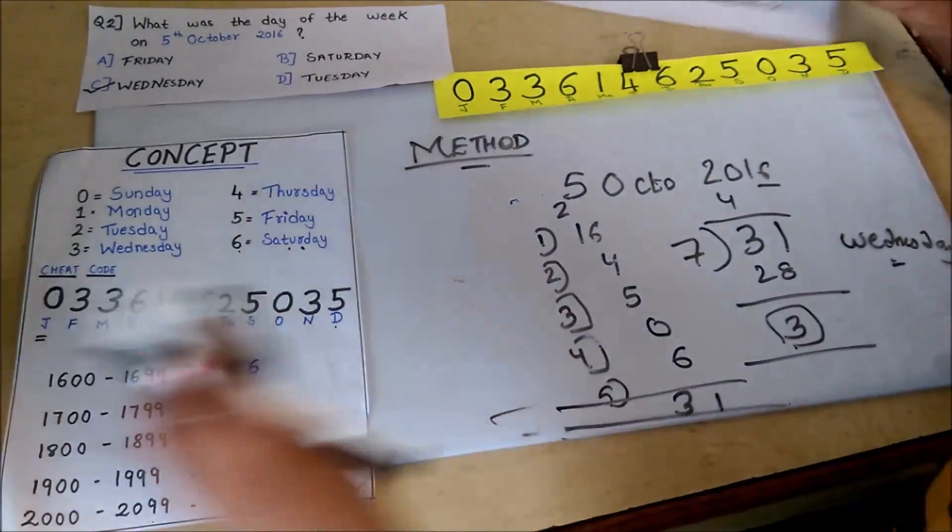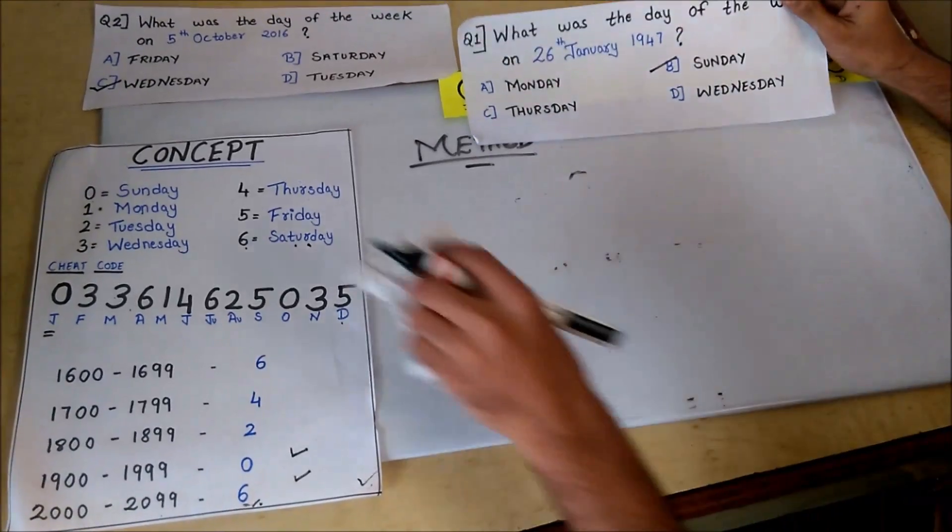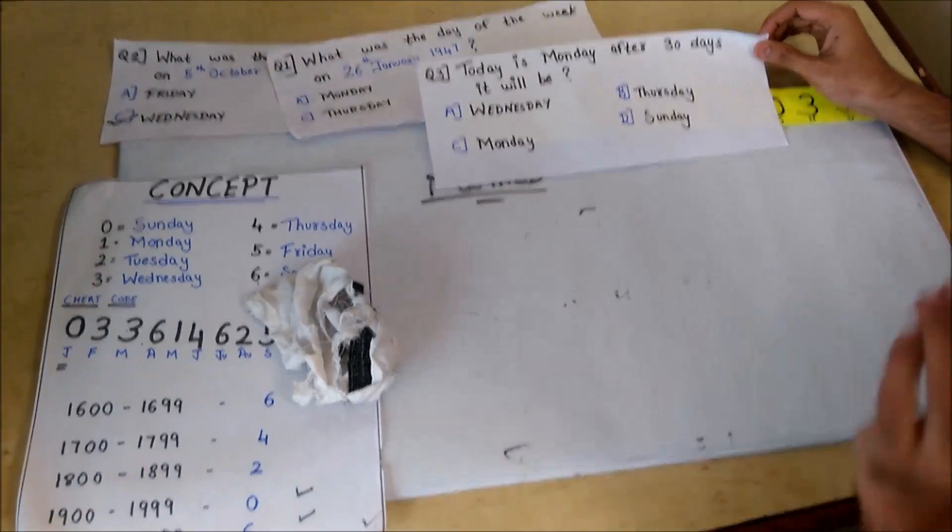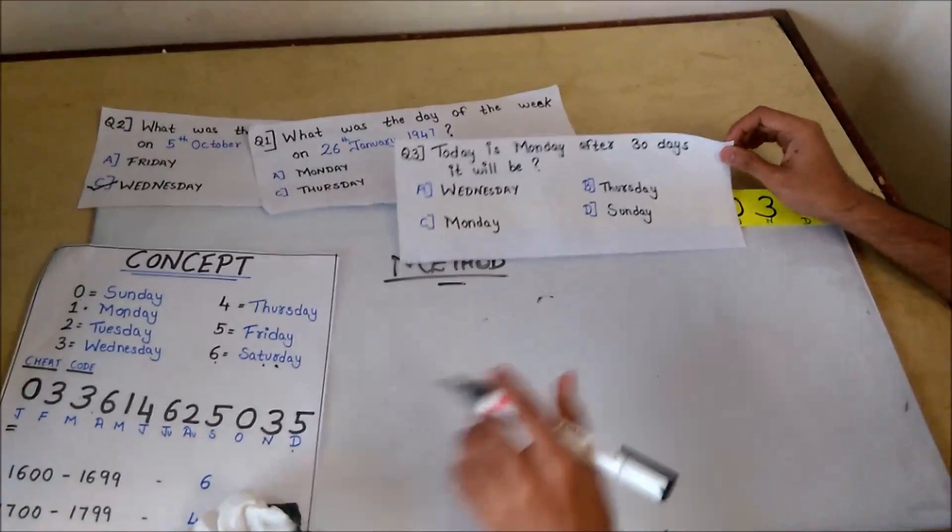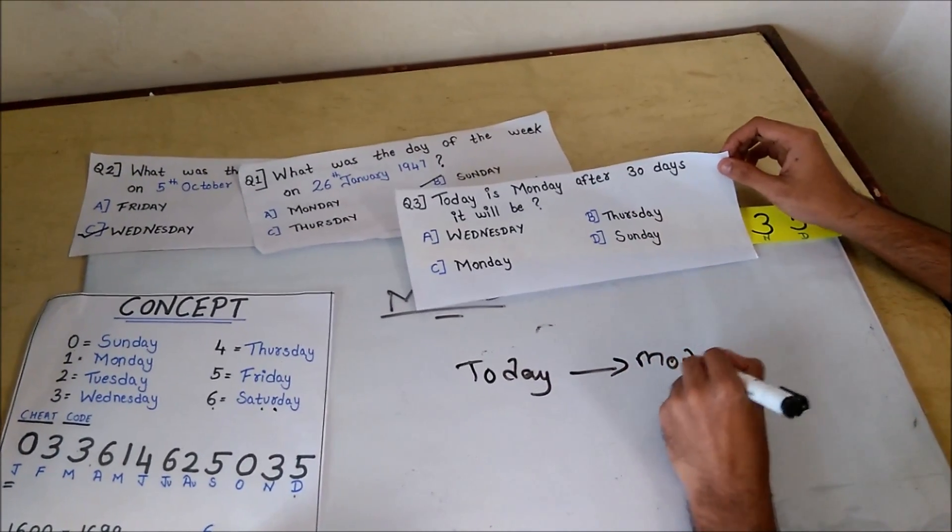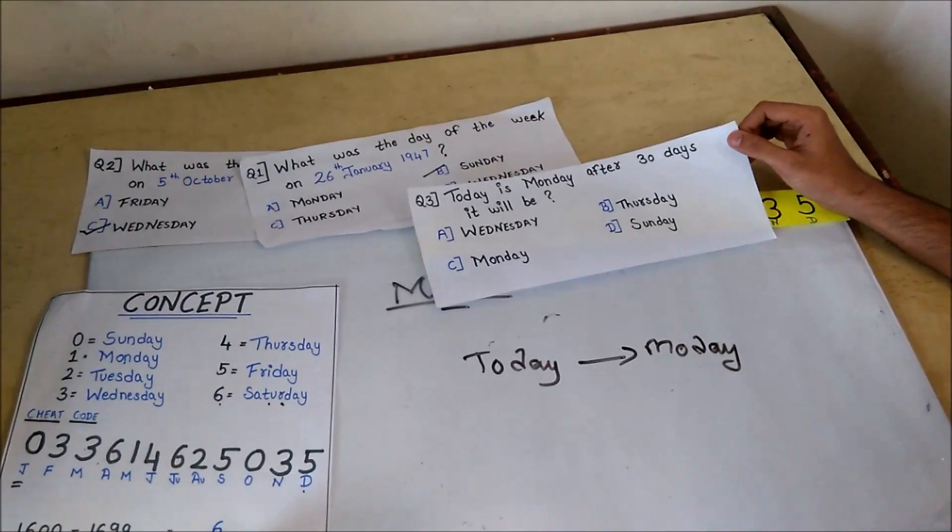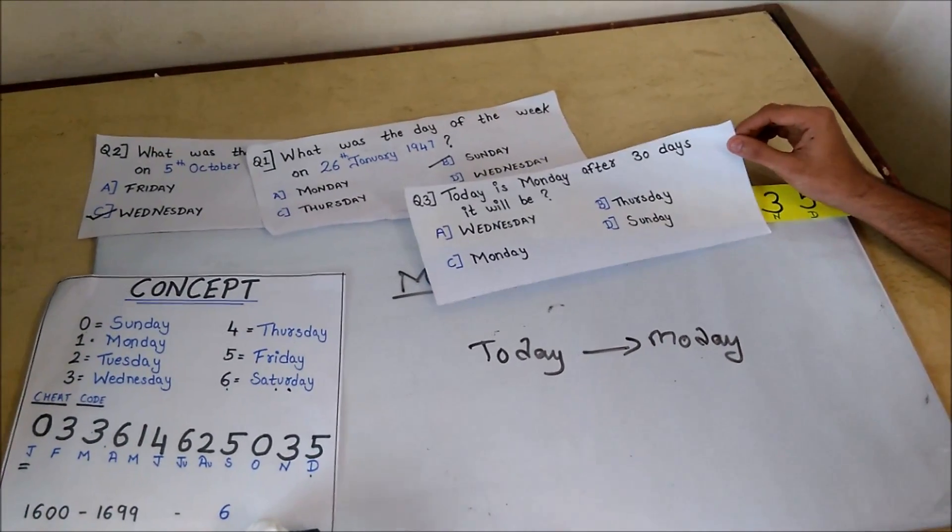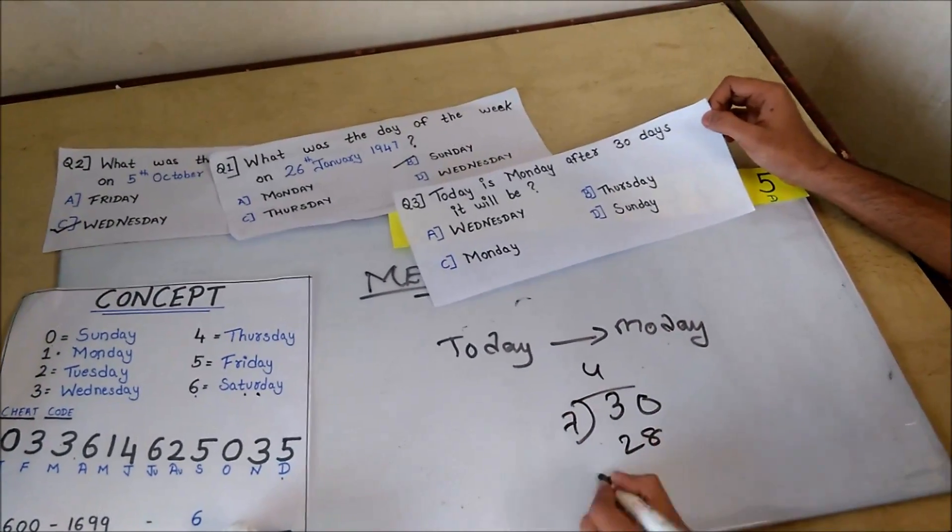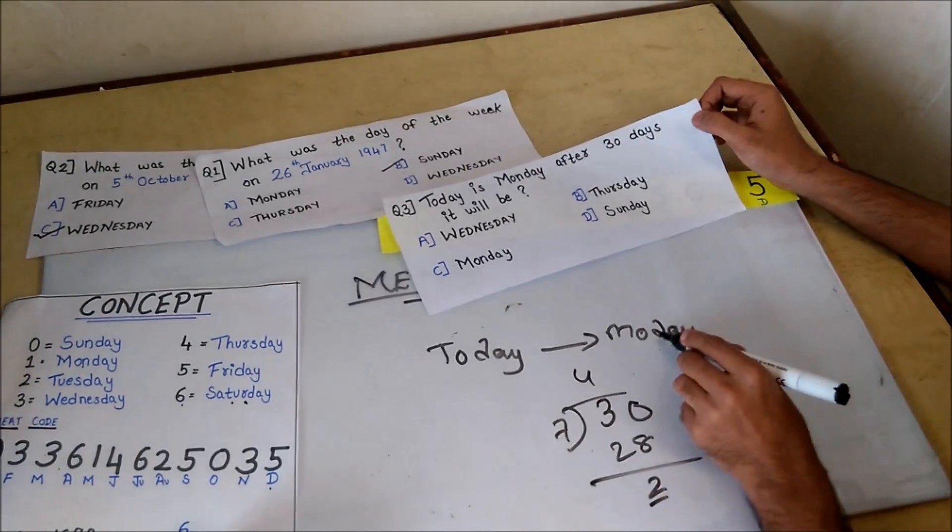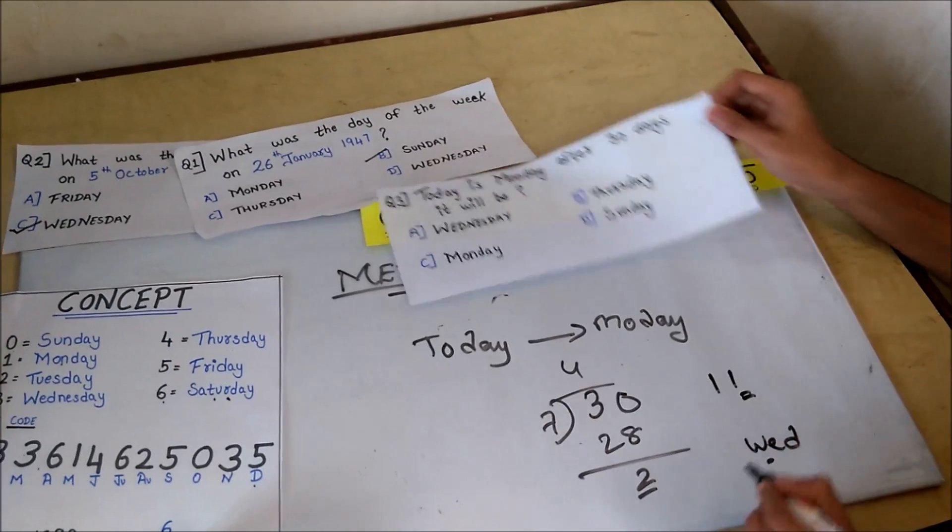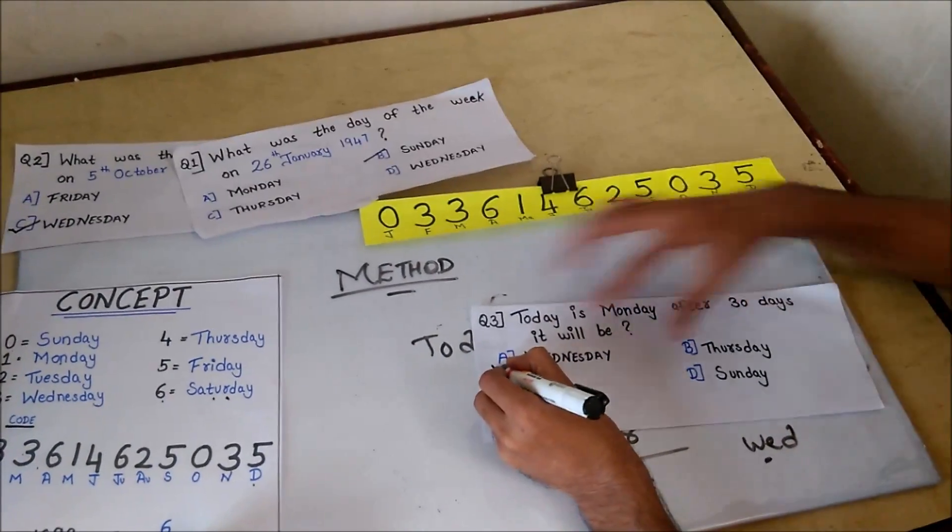Now see the third problem. Today is Monday. After 30 days it will be? It is the most easiest problem. Divide 30 by 7. 7 times 4 is 28, remainder 2. Monday was today. After 2 days: Tuesday, Wednesday. It will be Wednesday. So the answer is Wednesday.